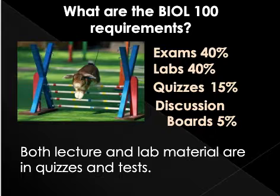The grade breakdown is: tests are your exams — three big exams in the semester — and they will be worth 40%. They'll be online on Canvas. Then you'll have your labs worth 40%, quizzes you take each week — since you meet twice a week, we'll have two sets of quizzes a week — and then discussion boards are worth about 5%.